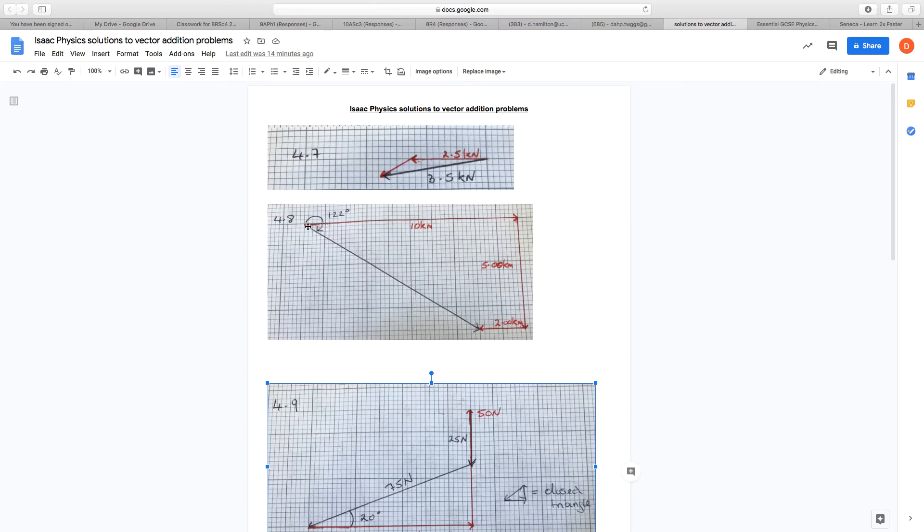So we started here, we ended up here, and the bearing then is measured from north being zero, round to this direction, which is 122 degrees. Hopefully you've measured that accurately.